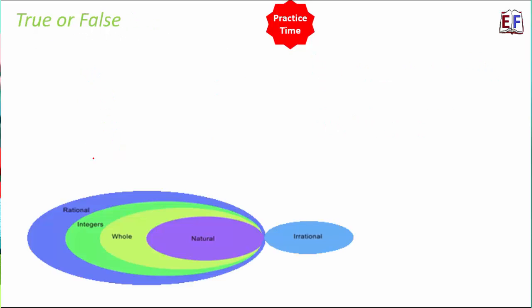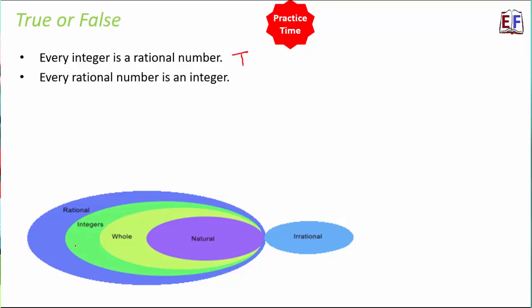Let's try some true or false questions. 'Every integer is a rational number' — looking at the diagram where integers are contained within rational numbers, this is TRUE. 'Every rational number is an integer' — FALSE, because numbers like −2/3 are rational but not integers.